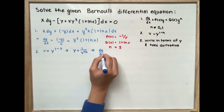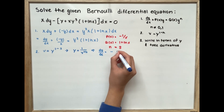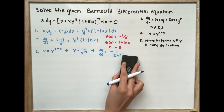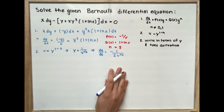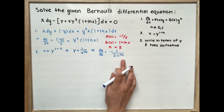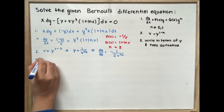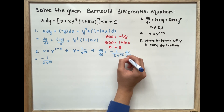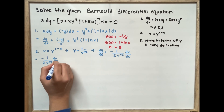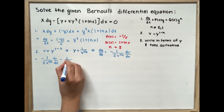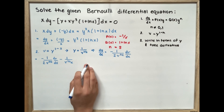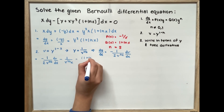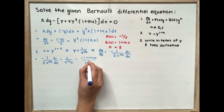Taking the derivative, dy over dx is equal to negative 1 over 2 times v to the power of 3 over 2, times dv over dx. We substitute this into our dy over dx equation, giving: negative 1 over 2 v^(3/2) times dv/dx, minus 1 over v^(1/2) times x, equal to (1 plus ln x) divided by v^(3/2).